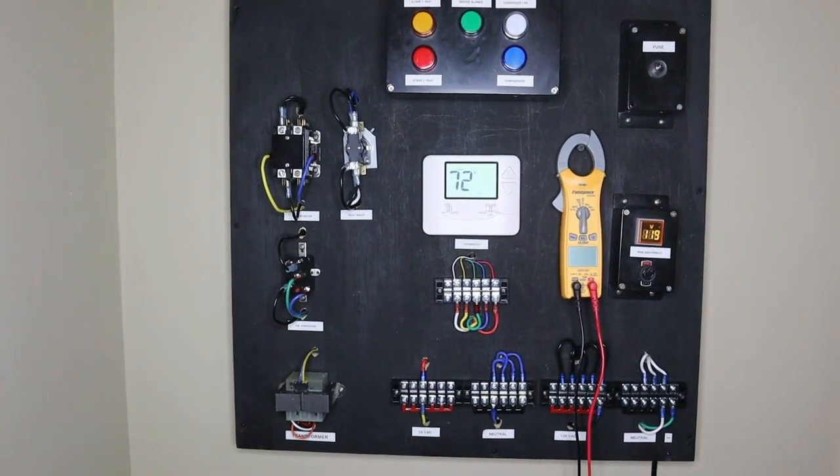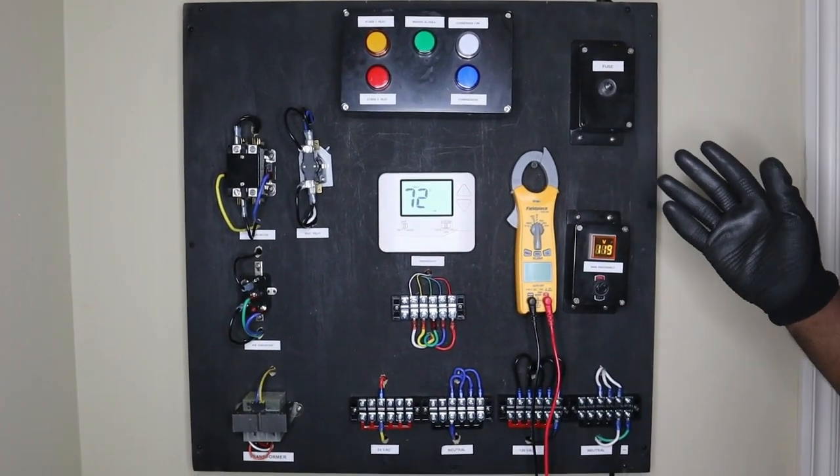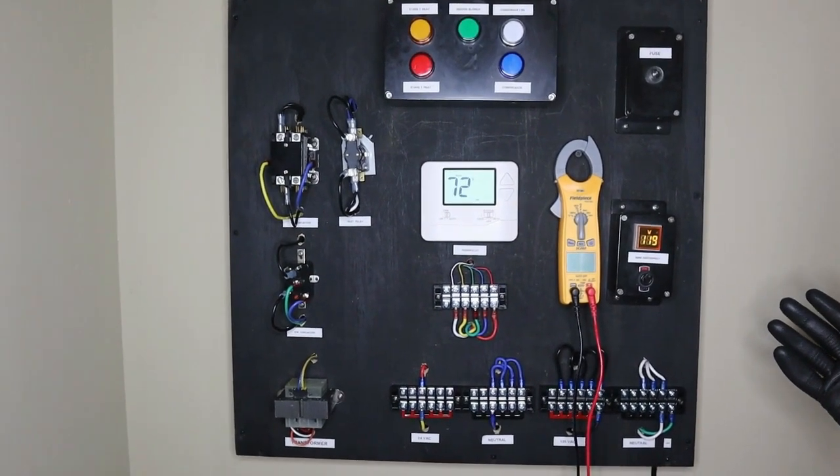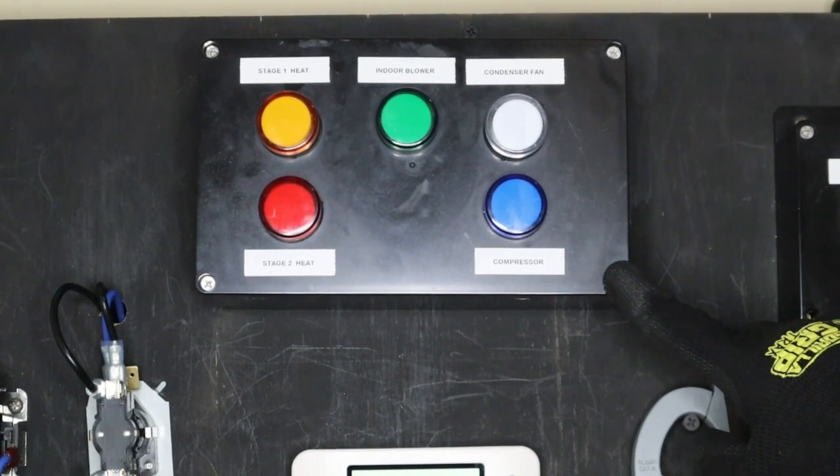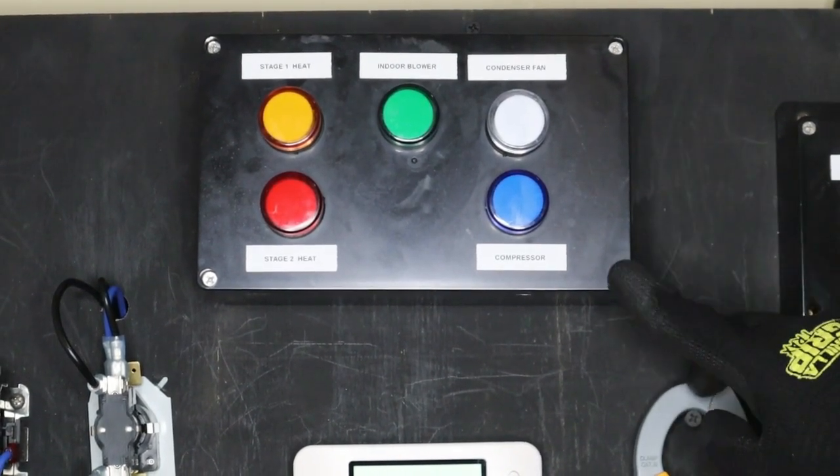For this build I use a series of common HVAC components. As you can see this is a waterproof project box six by three inches.